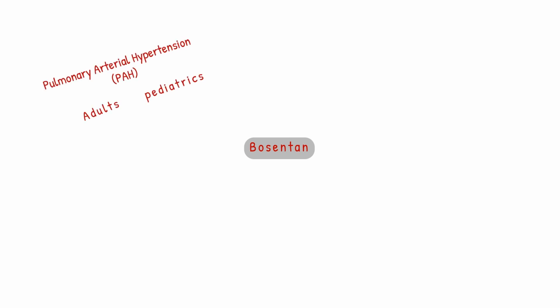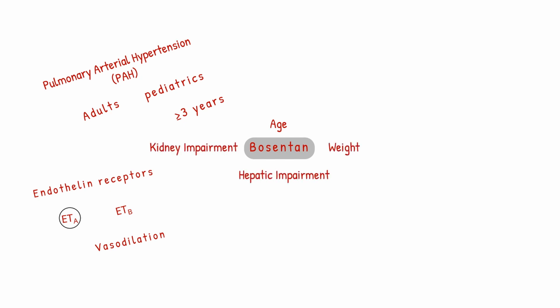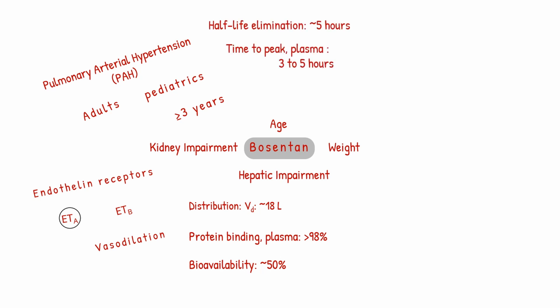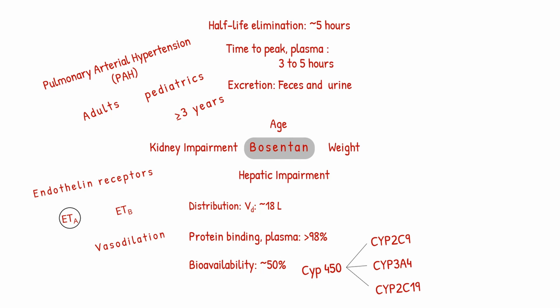To summarize: Bosentan is used for pulmonary arterial hypertension in both adults and pediatrics aged greater than or equal to 3 years. It blocks endothelin receptors ETA and ETB but has higher affinity towards ETA, resulting in vasodilation and decreased pulmonary arterial pressure. Dosing depends on age, weight, and hepatic or kidney impairment. Pharmacokinetic parameters: volume of distribution is approximately 18 liters, protein binding 98%, bioavailability 50%, half-life 5 hours, time to peak plasma 3–5 hours. Bosentan is metabolized via three CYP enzymes into three metabolites, one of which is 10–20% as potent as the parent drug, and excreted via feces and urine with less than 3% unchanged.